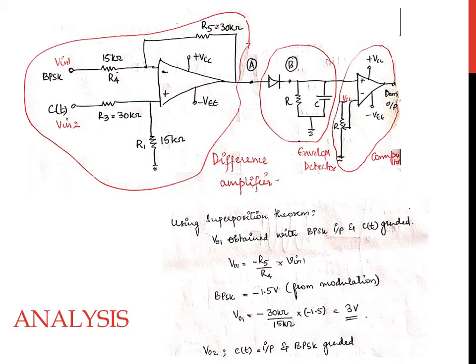The first stage is the difference amplifier which gives an output at point A. Then you have point B, the output of the diode. The second part of the circuit is the envelope detector and the third one is the comparator. Since the first circuit is the difference amplifier, we will use the superposition theorem again to obtain the output at point A. The inputs to the difference amplifier circuit are the binary phase shift keying signal and the carrier signal.